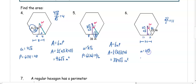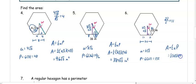So each half-side is 11, the full side is 22, and the apothem is 11 root 3. The perimeter is 6 times 22, which is 132. The area is one half times 11 root 3 times 132, giving us 726 root 3 meters squared.